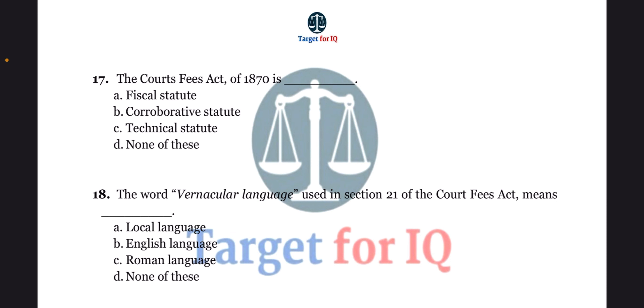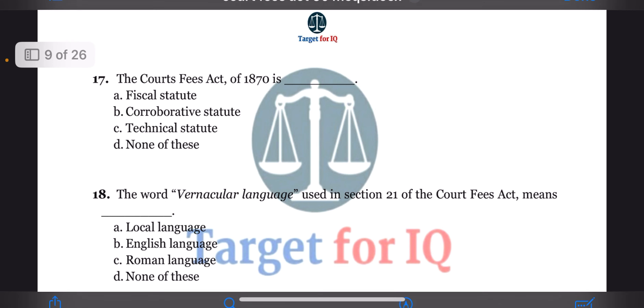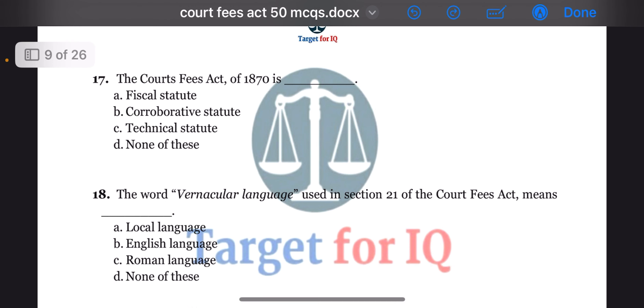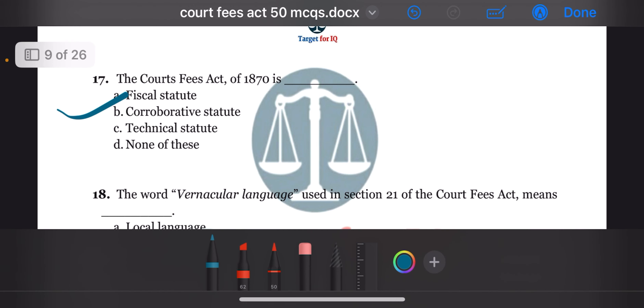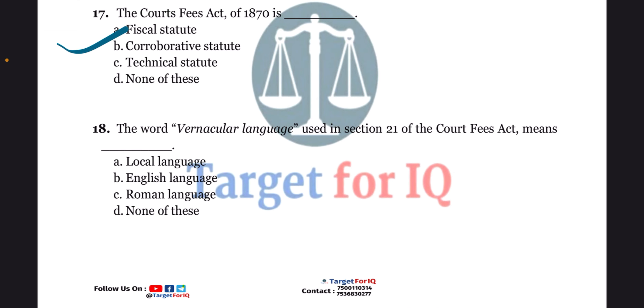Next question: the Court Fees Act of 1870 is dash. The options are A. Fiscal statute, B. Corroborative statute, C. Technical statute, or D. None of these. The correct answer is option A. Fiscal statute.